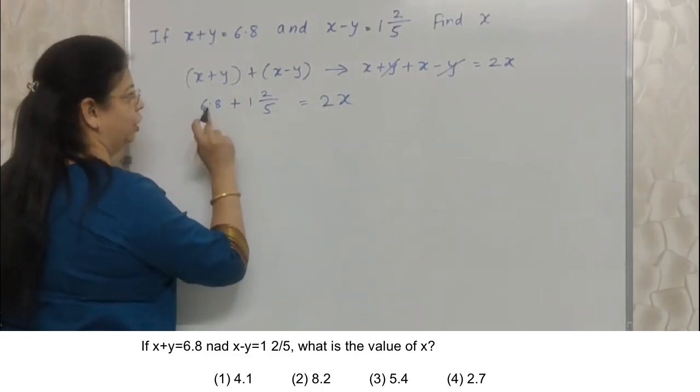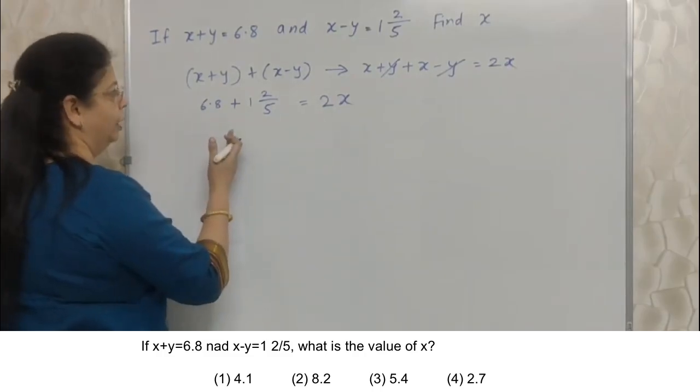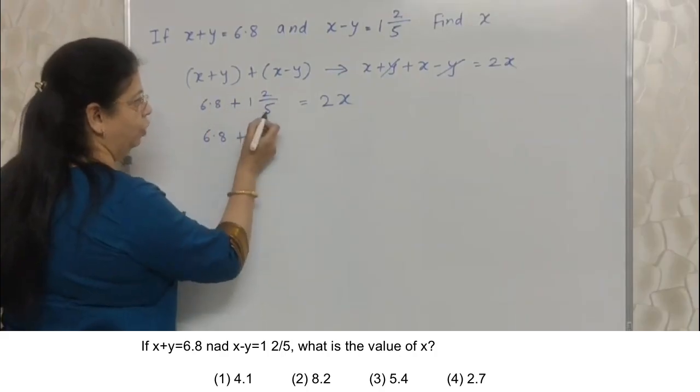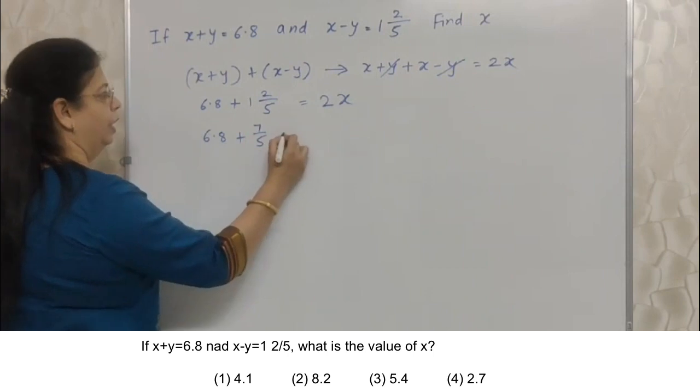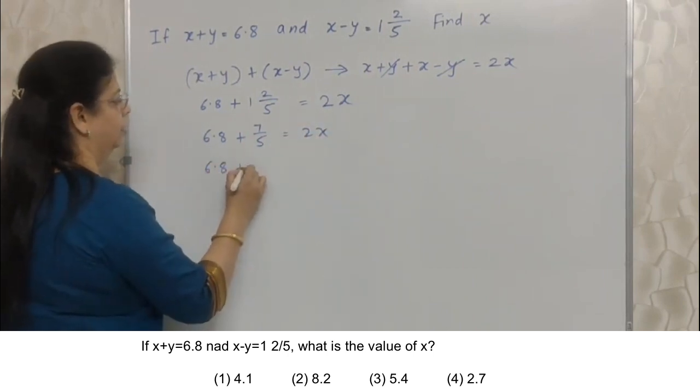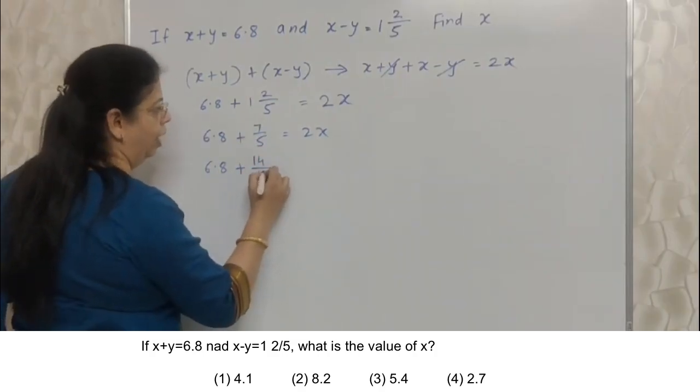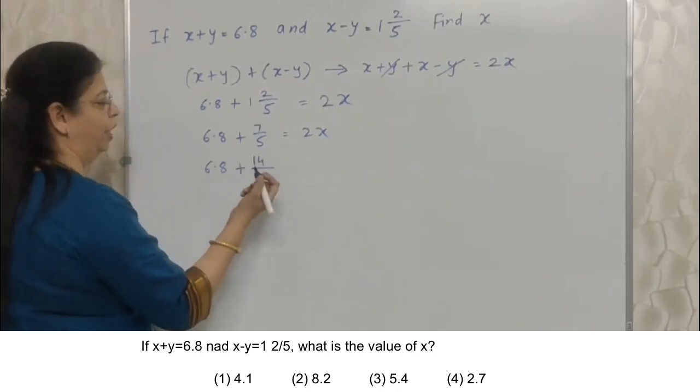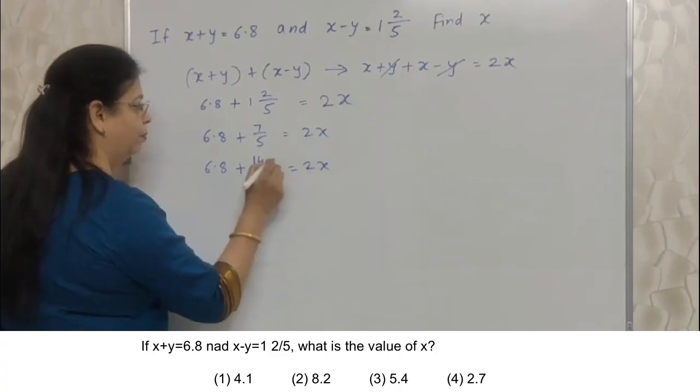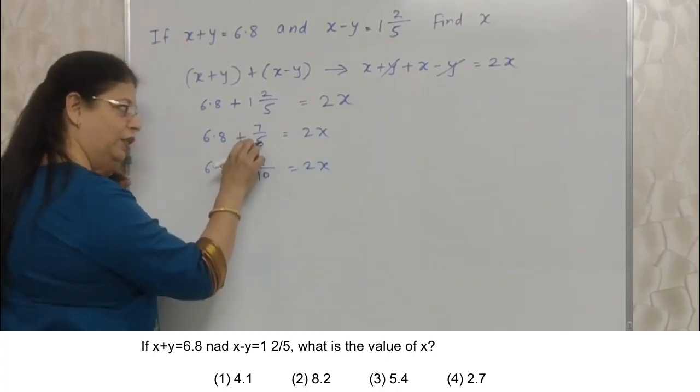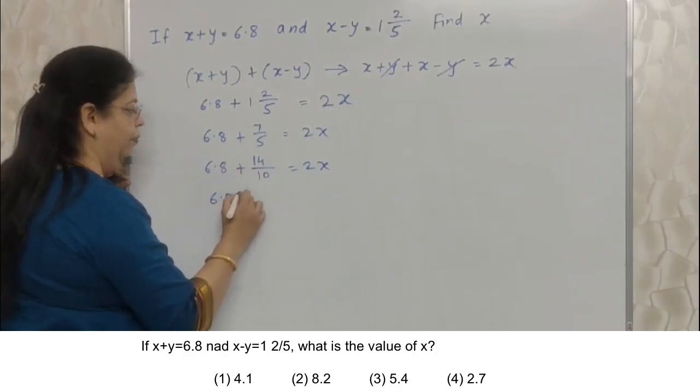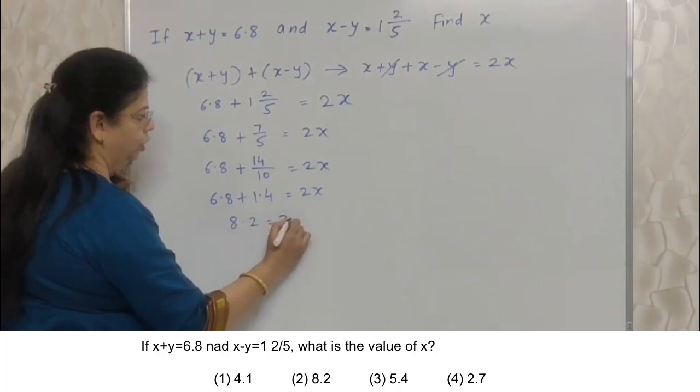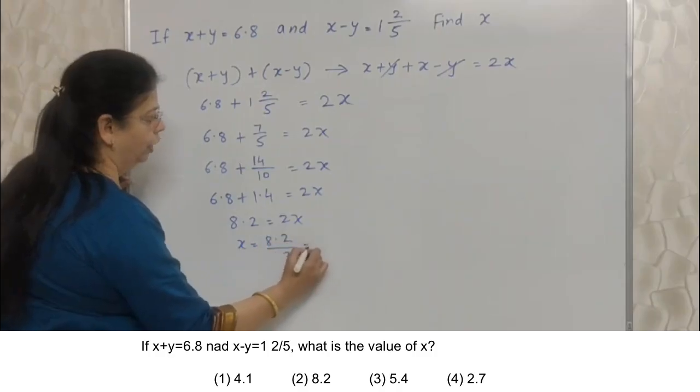Chalo. Ye either concept of decimal fraction, mixed fraction plays a very important role. You are learning this from standard 5. So you are confident about it. 6.8 plus, we will convert this into improper fraction. 5 ones are 5 plus 2, 7 upon 5. That is 2x. Now, 6.8 plus 7 upon 5 is same as 14 upon 10. I have multiplied both the numerator and denominator by 2. Because I want to convert that into decimal. If the denominator is 10, I can convert the fraction into decimal very easily. So that is the reason I have converted this 5 into 10. That's all. Even you can convert this into decimal. But this is the easier way. 6.8 plus, this is 1.4. So this is 8.2 that is 2x.